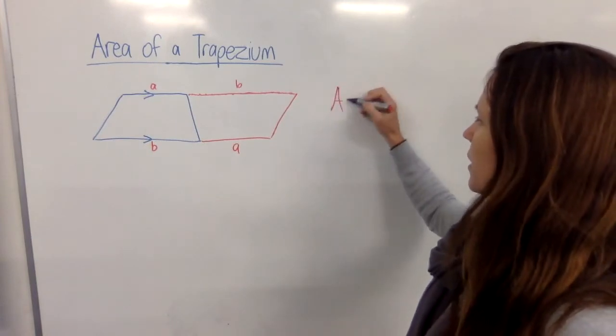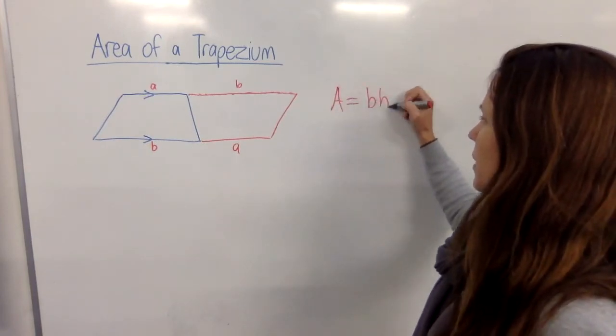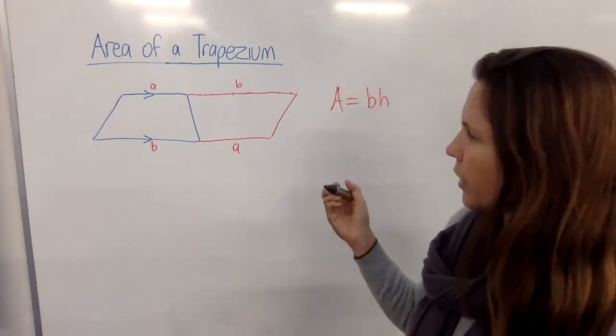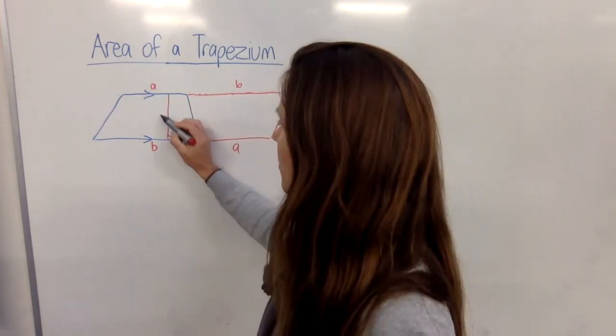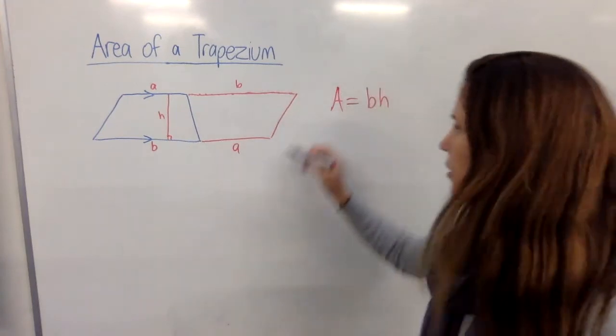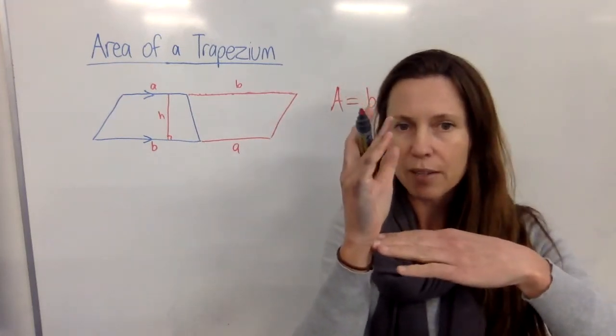Now we know already that the area of a parallelogram is base times height. But what is the height? If we had the height labeled here and remember it has to be the perpendicular height, not the slanted height, has to meet at right angles with the base,